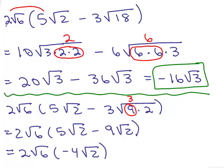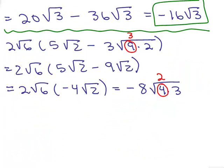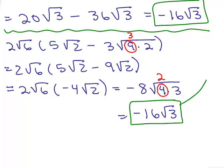Now I have to multiply 2 square roots of 6 times negative 4 square roots of 2. On the outside I have 2 times negative 4. For the inside I've got square root of 6 times square root of 2. Instead of writing 12, I'll write 6 times 2 as 4 times 3, so I can pop out the square root of 4 which is 2. So negative 8 times 2 is negative 16, and what's left is square root of 3. So the second method gives the same answer: negative 16 square root of 3.